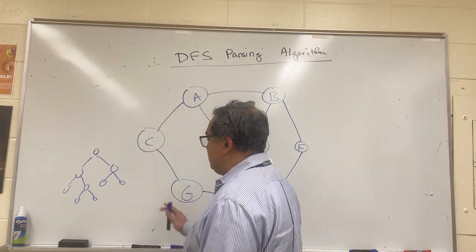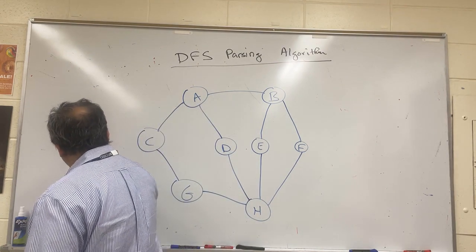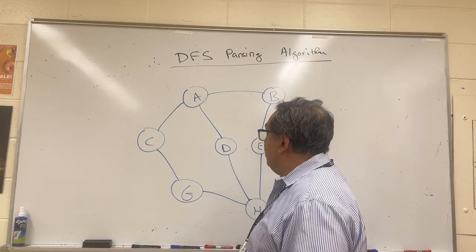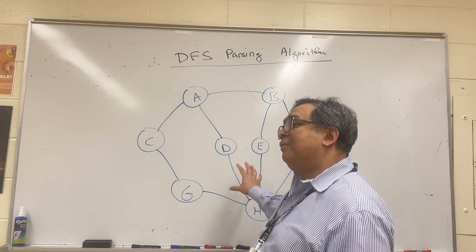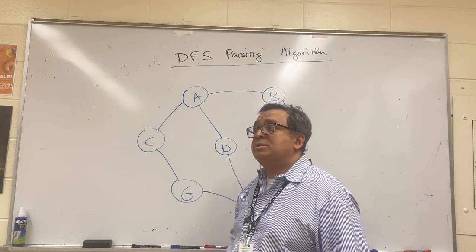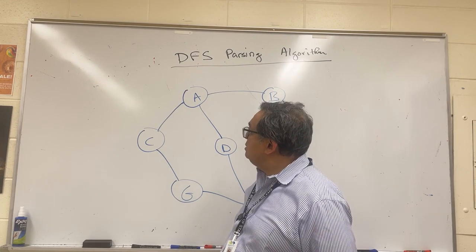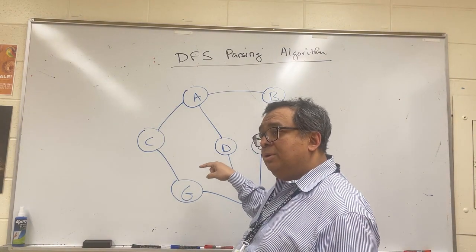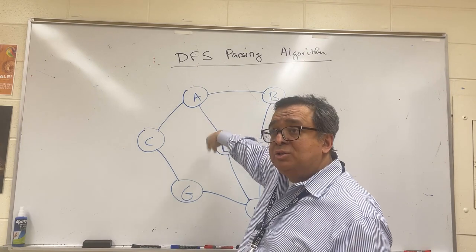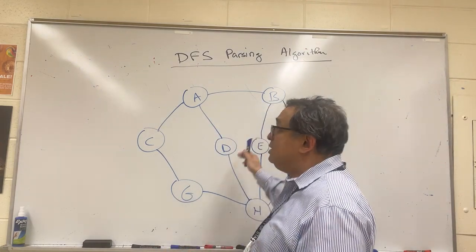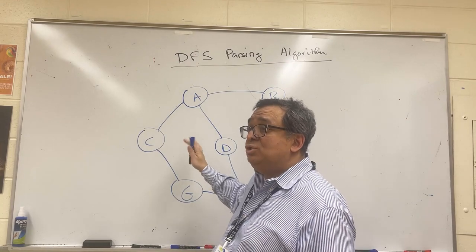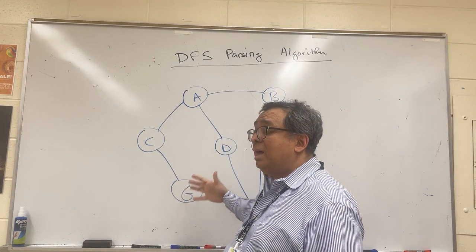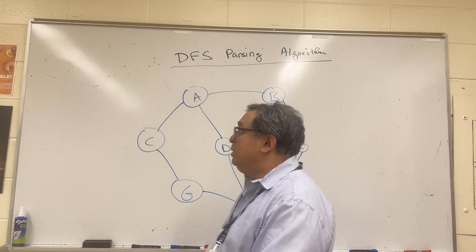That was a little review. When we have graphs, we have the similar concept of depth-first and breadth-first. There is one thing that makes it more complicated for a graph — a problem that does not exist with a tree. If we're not careful, we're going to end up going in circles. So we need to make sure that when we parse the graph, we only visit each node once.